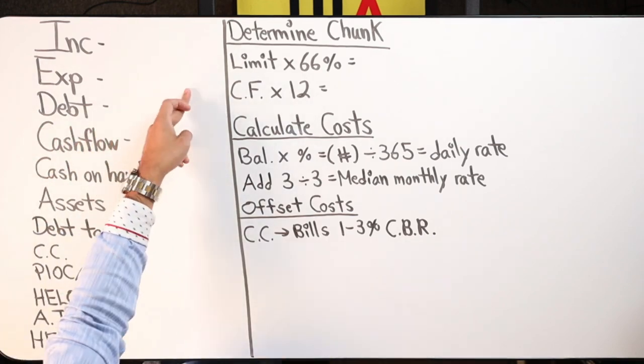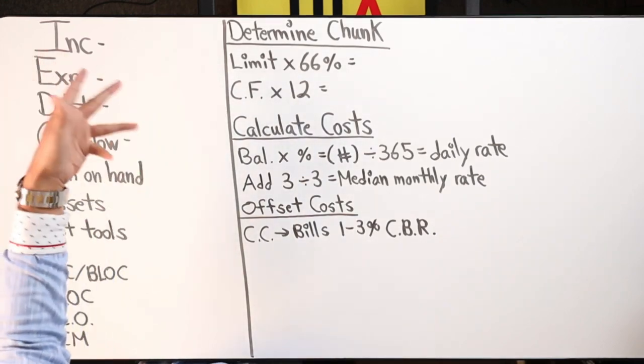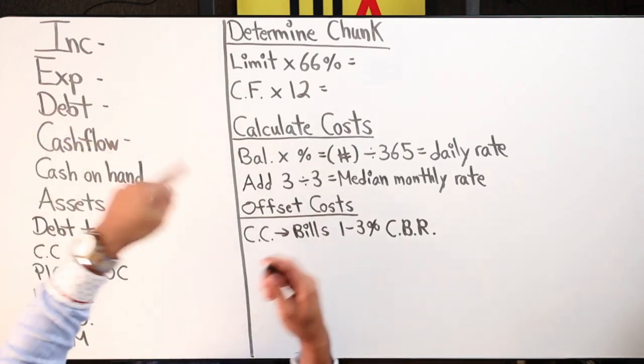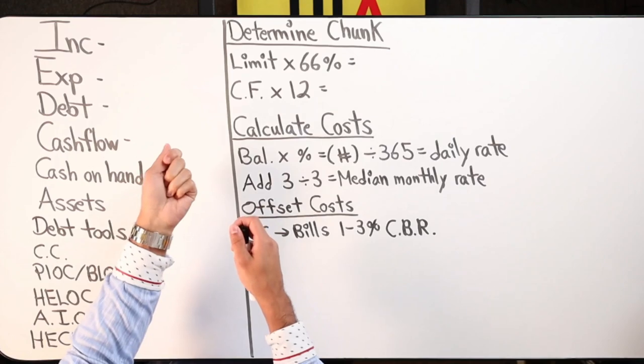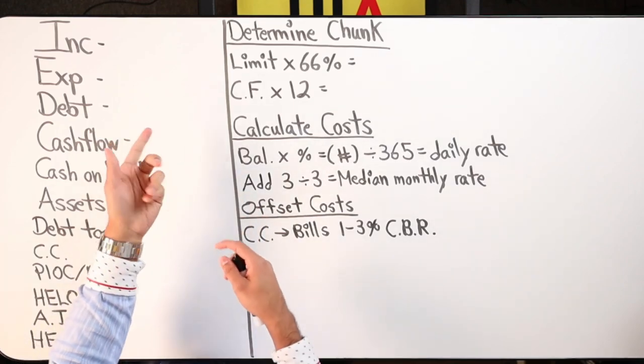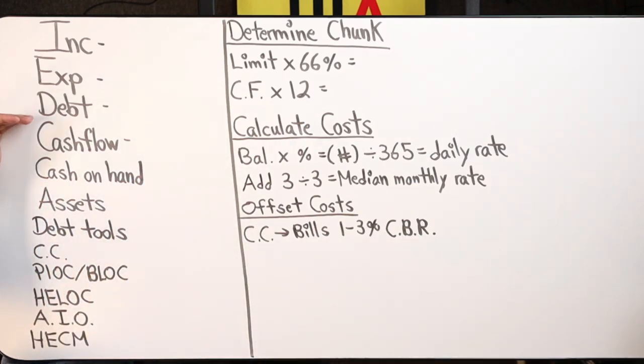They make 10 grand a month, they say they spend five, they're in debt a half a mil, and they say they have cash flow of 5K, but then when I really look at their numbers, they're more like cash flowing 500 bucks.